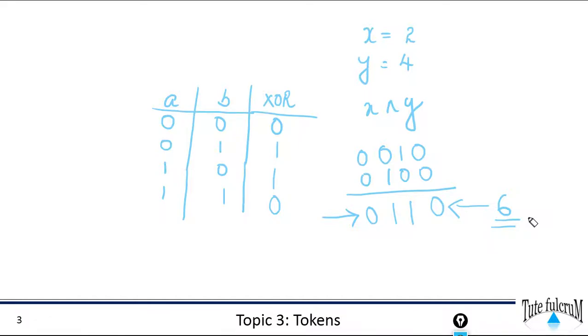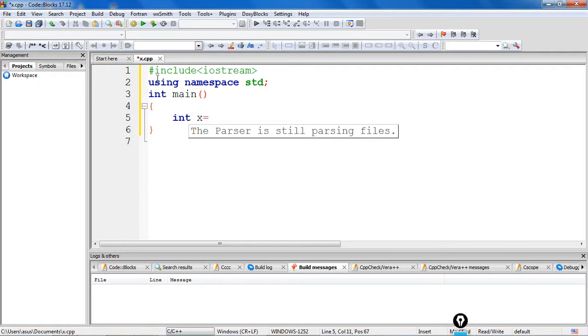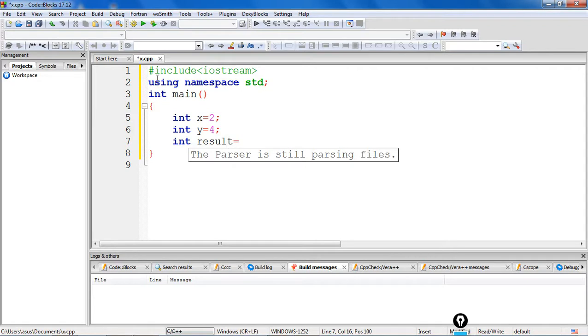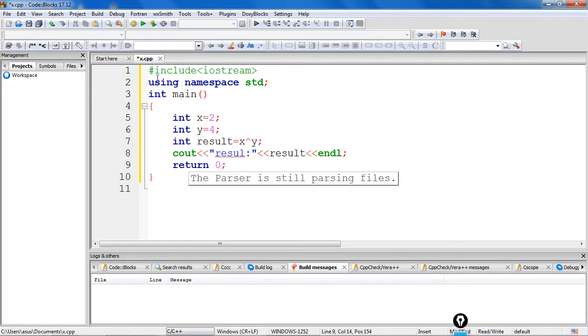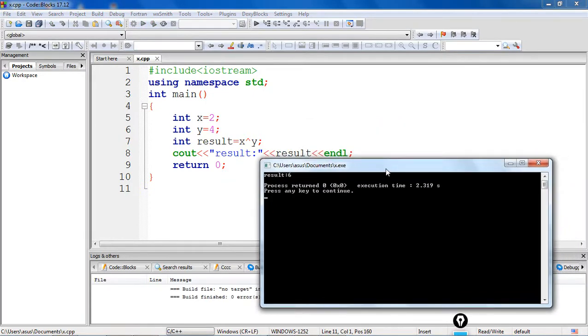So let's write a program and verify this. Let's take our operands, X initialized with 2 and Y initialized with 4. Let's use a variable result to store the result and we are doing the operation X XOR Y. Let's use a Cout statement to print the result. Now let's verify our output. So as expected, we are getting the output as 6. So this is how the XOR operator works.